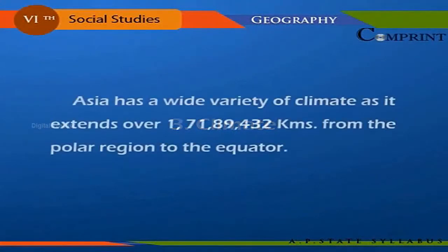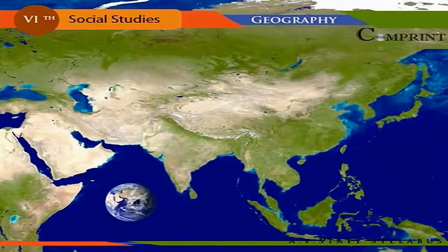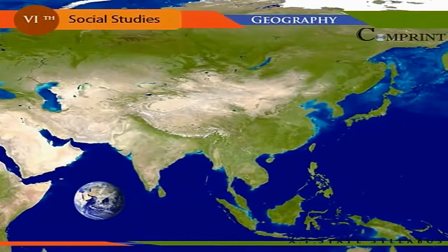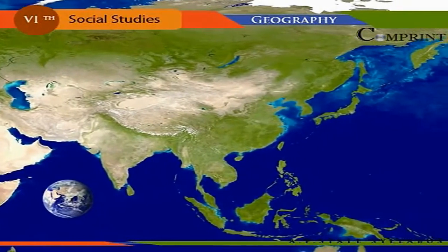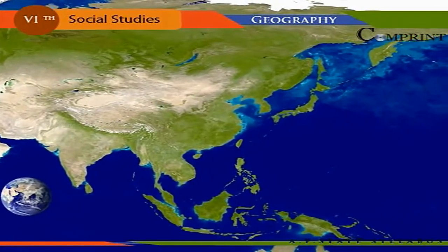Asia has a wide variety of climates as it extends over thousands of kilometres from the polar region to the equator. The central part of Asia is very hot in summer with nearly 30 degrees Celsius temperature, and the winter is very cold with less rainfall.